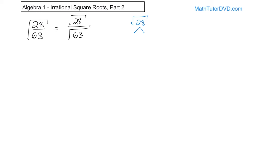28 can be written as 7 times 4, and 4 can be written as 2 times 2. Now everything at the bottom of the tree is prime, so I circle the pair of 2s. The single 2 comes out. The 7 is orphaned, so he has to stay under the radical. So I get 2 times the square root of 7 as the answer to the square root of 28.